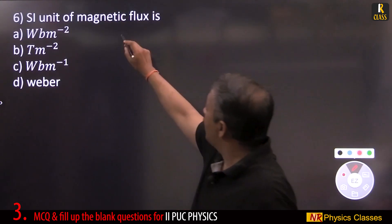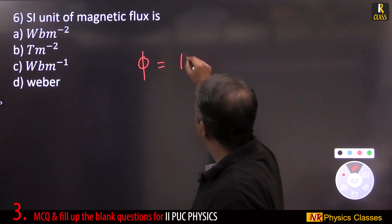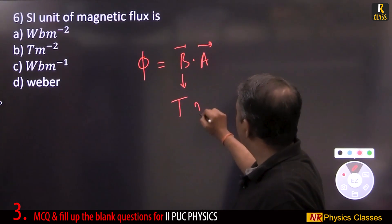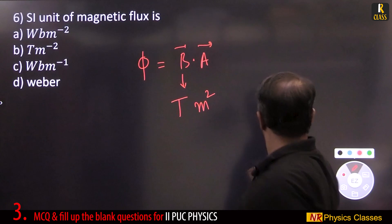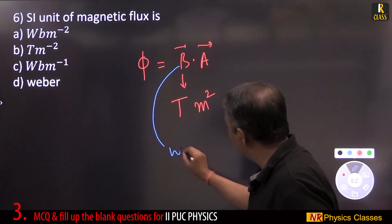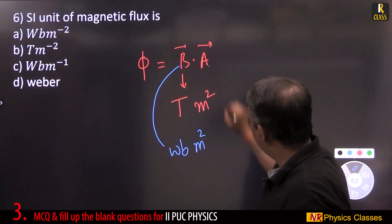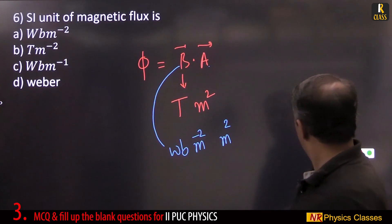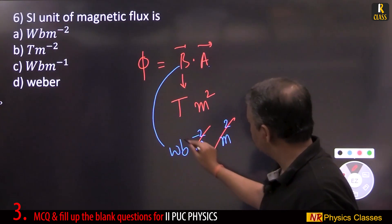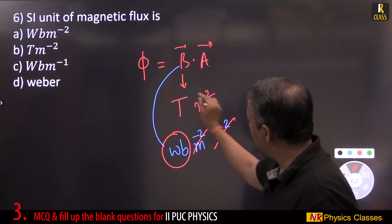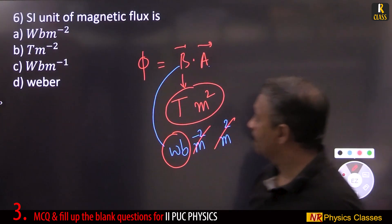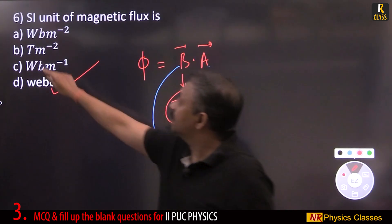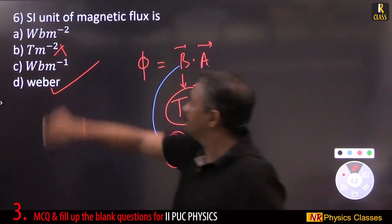The SI unit of magnetic flux: magnetic flux is B·A. B is in Tesla (or Weber per meter squared), and A is in meter squared. So the meter squared cancels, giving either Weber or Tesla·meter squared as the SI unit of magnetic flux.